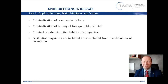Another point I would like to stress is the liability of legal entities. More and more countries in the world establish criminal liability of legal entities. However, some countries still have only administrative liability. I would recommend you to check all the applicable laws and consider provisions on criminal liability of legal entities or administrative liability in your compliance programs, in particular in a policy on due diligence of third parties. You should check your third parties to be sure that your business partners or potential business partners were not involved in any kind of corrupt behavior and were not convicted according to criminal or administrative law.